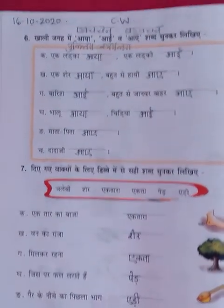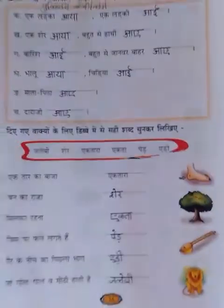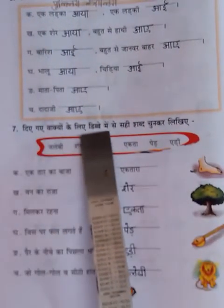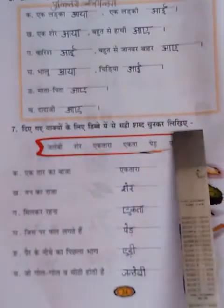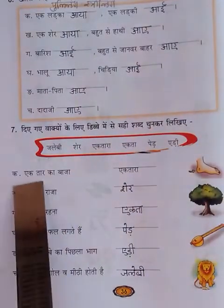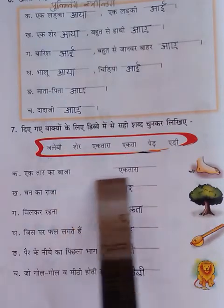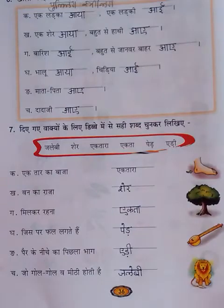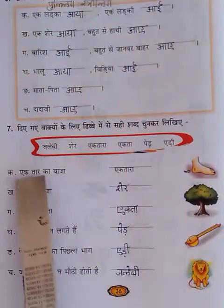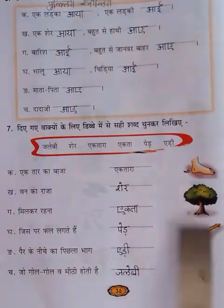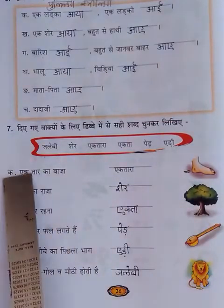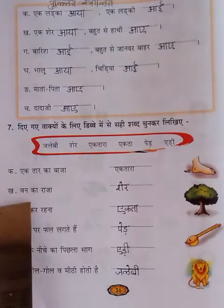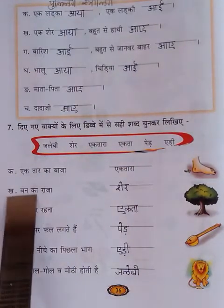Now let's start question number 7. This is given as an example. Who is the king?